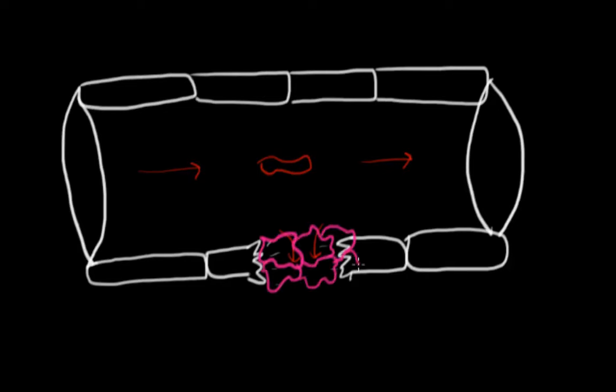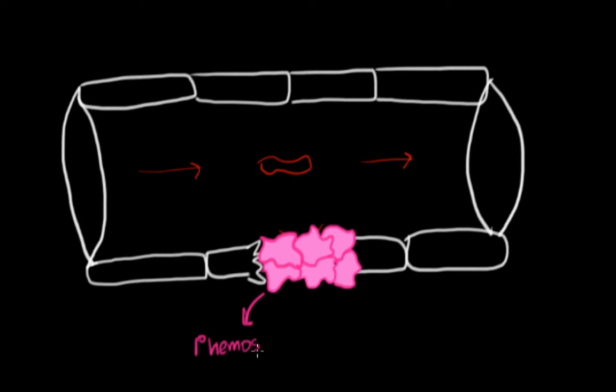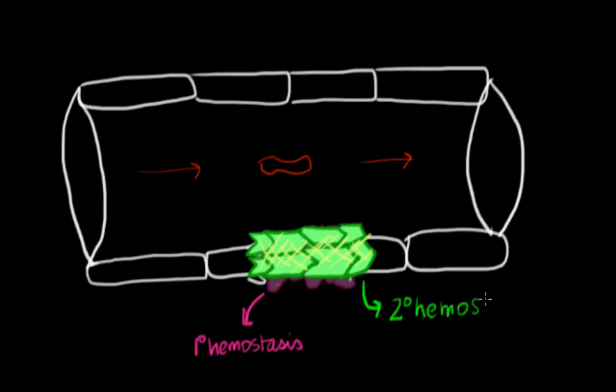The way we do this is first we make a platelet plug, and this is the goal of primary hemostasis. Then in order to make that stronger, what we do is we link fibrin together on top of that platelet plug and make a mesh. This is what makes the platelet plug stronger, and this is what we accomplish in secondary hemostasis. When we have primary and secondary working together and we form this mesh with the platelet plug, this is called a clot.